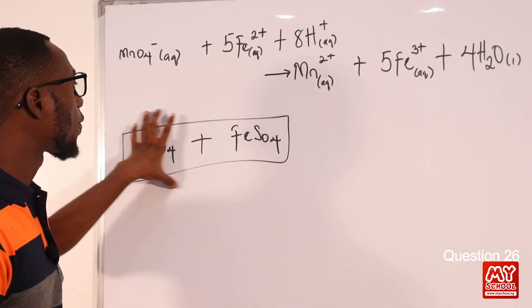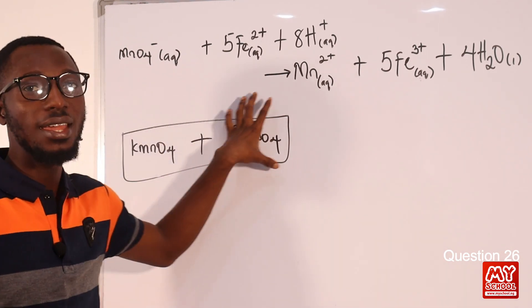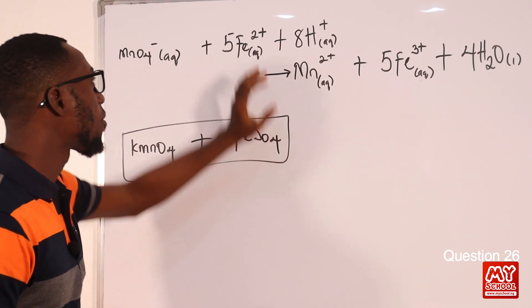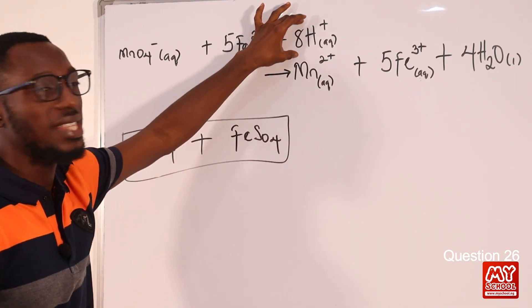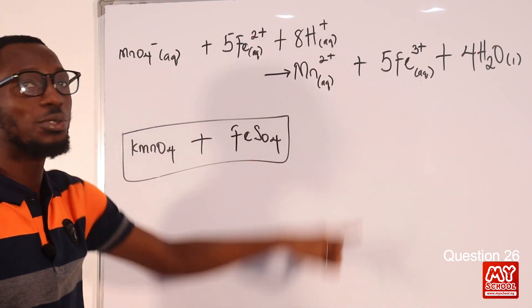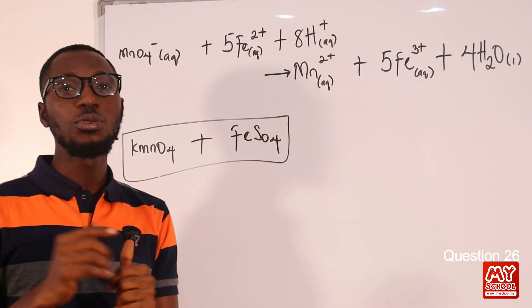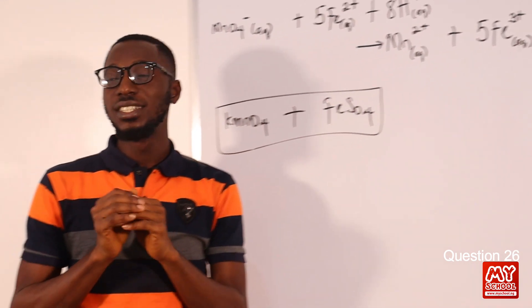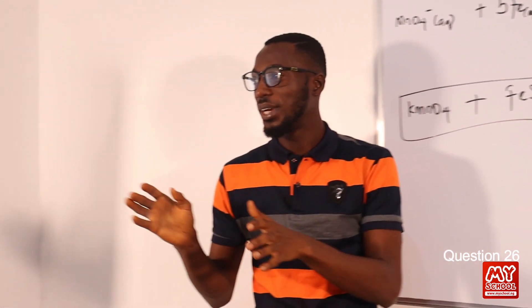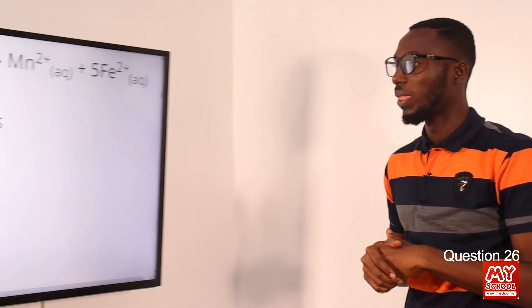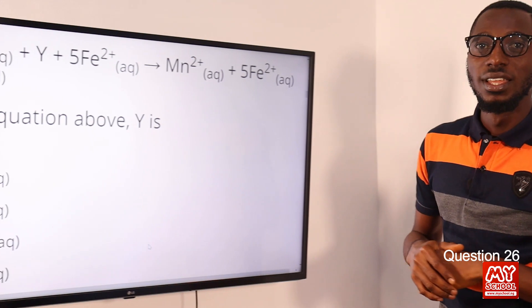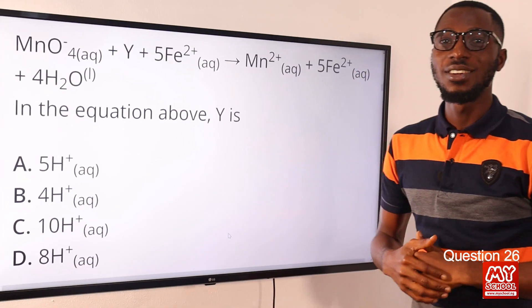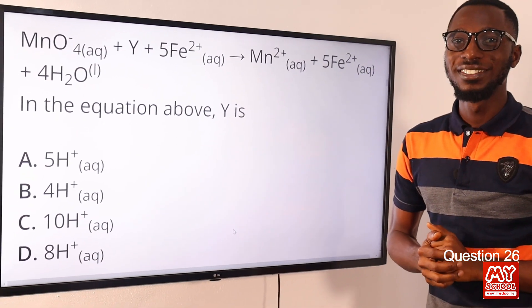Between KMnO4 and FeSO4. So what we are looking for is this — the correct option here should be what we are looking for on the screen. We have option D. So option D is the correct option.